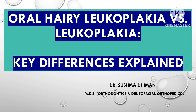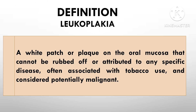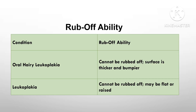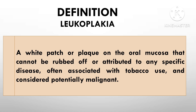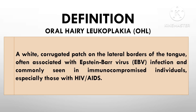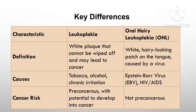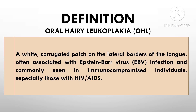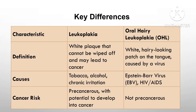Starting with definitions: leukoplakia is a white patch or plaque that develops inside the mouth, usually on the tongue, cheeks, or mouth. These patches cannot be wiped away and they don't have a clear cause like an infection or injury. Unlike leukoplakia, oral hairy leukoplakia (OHL) is directly related to HIV or immunocompromised states, and it shows up as white hairy-looking patches on the side of the tongue.